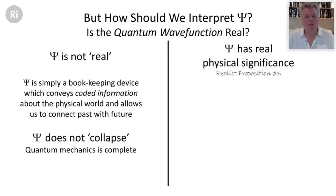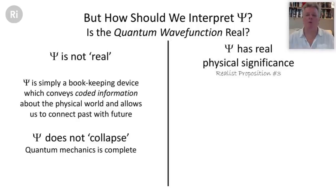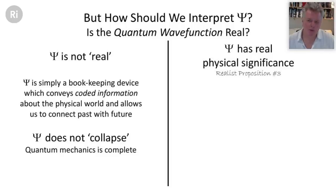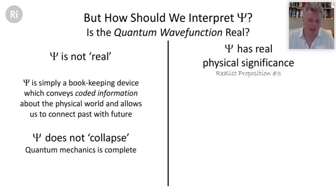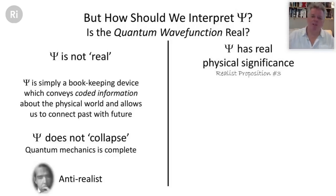Assuming the wave function has no real physical significance means that quantum mechanics as a theoretical structure is complete — there's nothing more to discover. The equations we have are all there are. Quantum mechanics has been developing since the mid-1920s and is now a very sophisticated set of formulae that allows us to do exquisite things in the quantum domain. This was Bohr's position — effectively an anti-realist position.